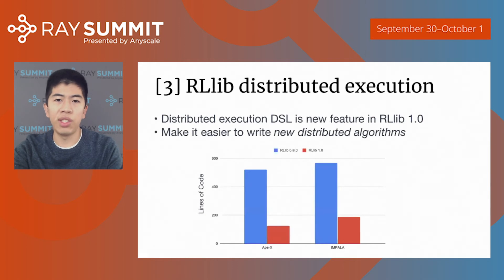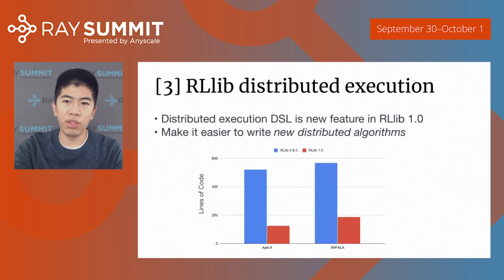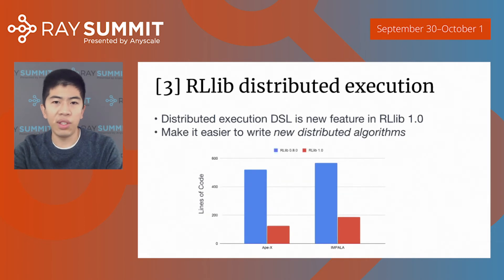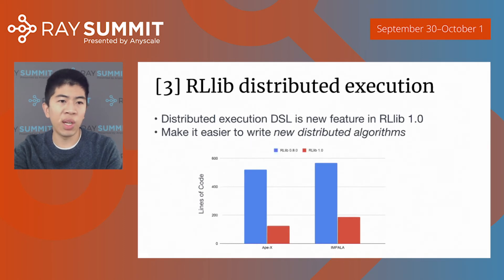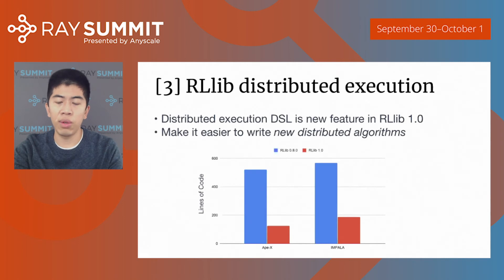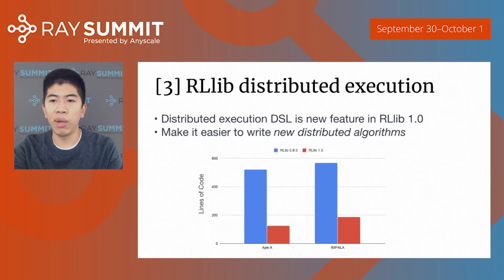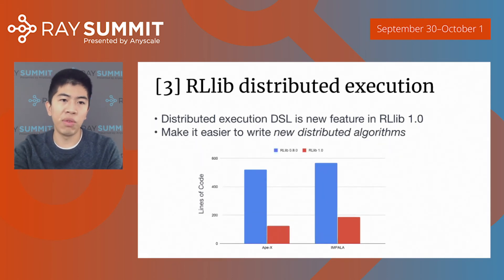This distributed execution DSL is a new feature of RLib 1.0 — it makes it much easier to write new distributed algorithms. We've already ported all the internal RLib algorithms to this new paradigm, and it's a huge simplification. For example, Apex and Impala, two of the more complex high-performance distributed algorithms in RLib, have gone from four to five hundred lines of code to just one to two hundred lines of code. Keep in mind, this is real production code with debugging statements, metrics reporting, and so on — so this is a really huge simplification in terms of readability.